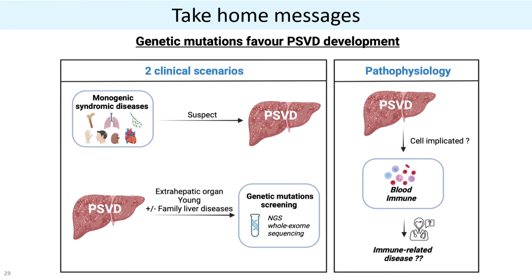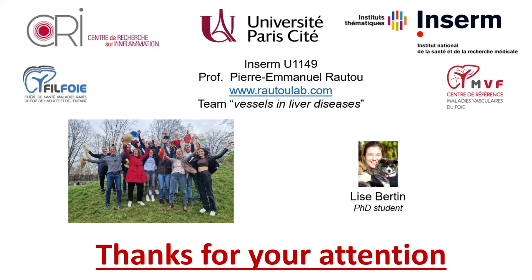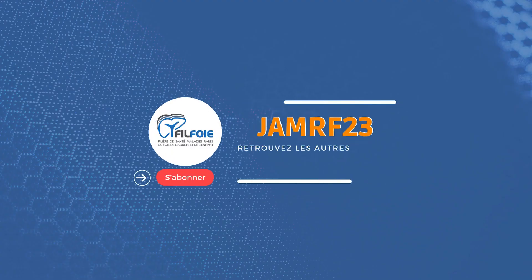Finally, in the pathophysiology of PSVD, after our analysis, blood immune cells arise as a possible cell type that could be implicated in PSVD development. While it is still unknown which mechanism could be involved, this opens a new question — that PSVD could be considered an immune-related disorder. Thank you everybody, and I would like to thank Liz Bertin who is also here with me and who has been working on this presentation and helping with a lot of the work.